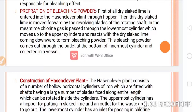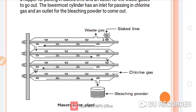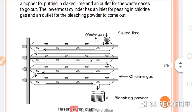The bleaching powder comes out through the outlet at the bottom of the innermost cylinder and is collected in a vessel. You can see the slaked lime entering from above, and from this portion you can see where we are inserting the chlorine gas — the open part of the Hazen Clover plant. Both interact with each other, and the bleaching powder formed is collected here, as shown in the diagram.